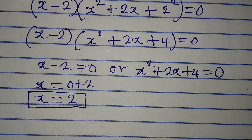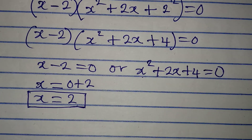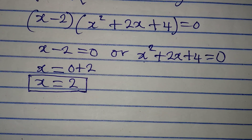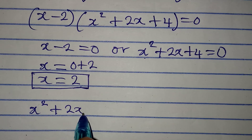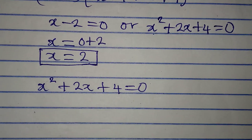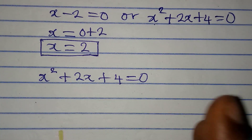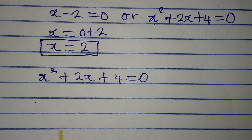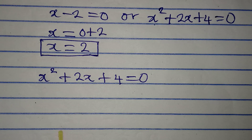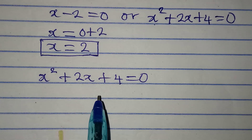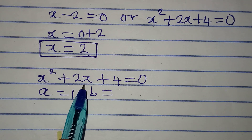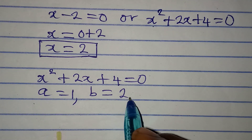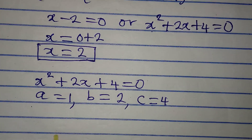From the quadratic equation x squared plus 2x plus 4 equals 0, we can get two more solutions, although they will not be real. We cannot factorize this expression, so we apply the quadratic formula. Here a is 1, b is 2, and c is 4.